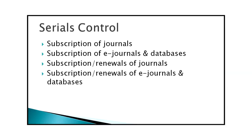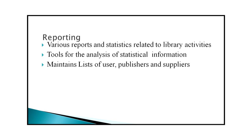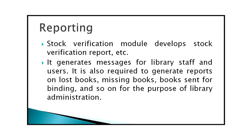In the serials control module of the library, the following activities are done: subscription of journals and e-journals and databases, subscription and renewal, claiming of missing issues, replacement of journals, monographic serials and invoice processing. For reporting, libraries need to prepare various reports and statistics related to library activities, tools for analysis of statistical information, and maintenance of user, publisher and supplier details. Libraries also undertake stock verification — the stock verification module generates reports on lost books, missing books, books sent for binding, and other reports for library administration.